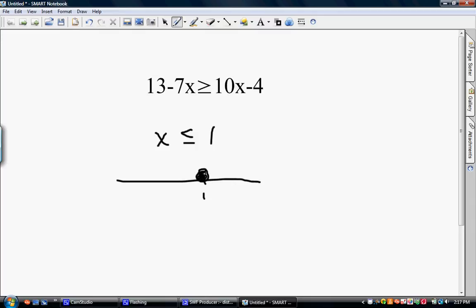And remember I said it would be better to keep your variables on your left? If you keep your variables on your left, you can use this arrow to let you know which direction you're going on your number line. My arrow points to the left, so this goes to the left.